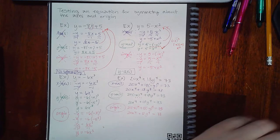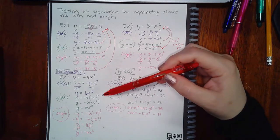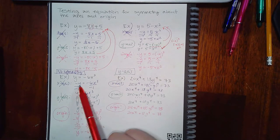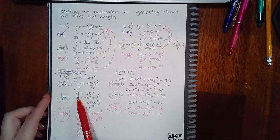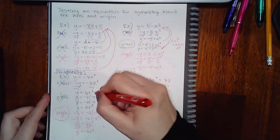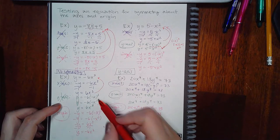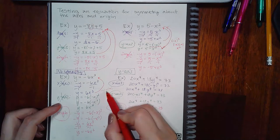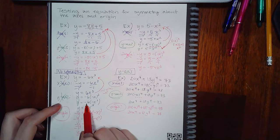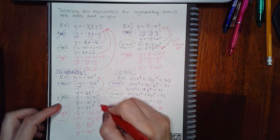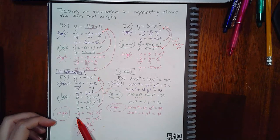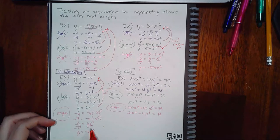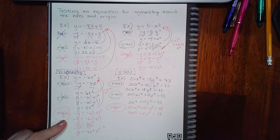For the equation with 6x cubed: plugging in negative y and dividing by negative 1 gives positive 6x cubed, which does not equal the original. Plugging in negative x: negative x cubed equals negative x cubed, and multiplying by negative 6 gives positive 6x cubed — still not equal. But plugging in both negative x and negative y simultaneously still gives positive 6x cubed, and dividing by negative 1 gives y equals negative 6x cubed, which does equal the original. So this one has symmetry with respect to the origin.